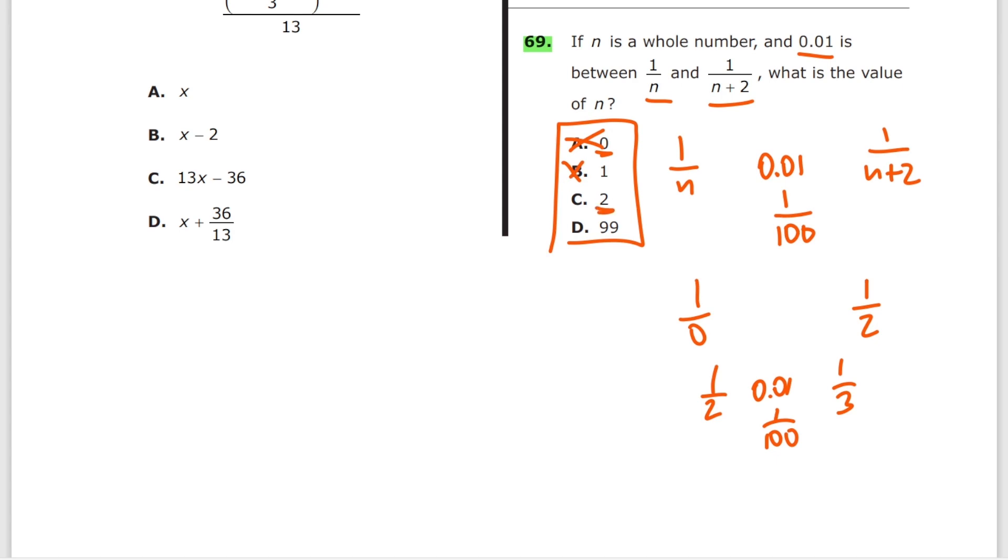Let's plug in C. For C you get 1 over 2 and 1 over 4, right? N plus 2, 1 over 4. Now 1 over 100 also is too tiny to be in between. So C is out. That's it. It has to be D.